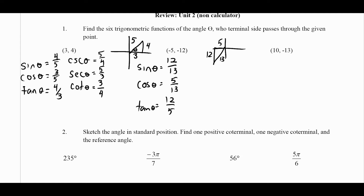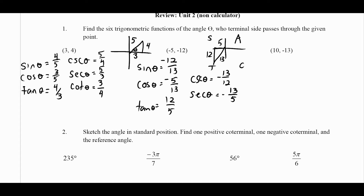Since this is in the third quadrant, remember 'All Students Take Calculus' to determine whether values are positive or negative. In the third quadrant, tangent is the only one that's positive, so we make sine and cosine negative. Cosecant of theta is negative 13 over 12, secant of theta is negative 13 over 5, and cotangent of theta is 5 over 12 — and that's it.